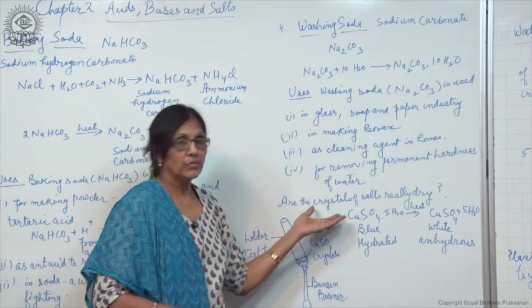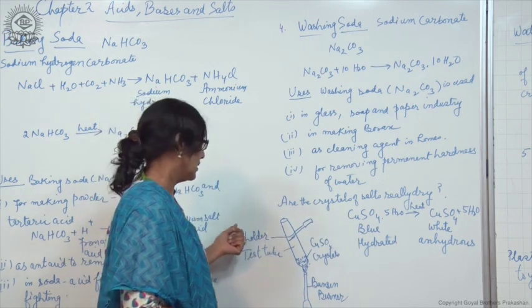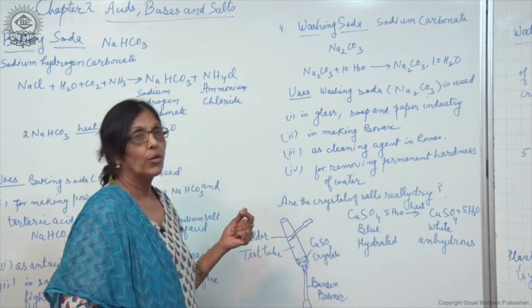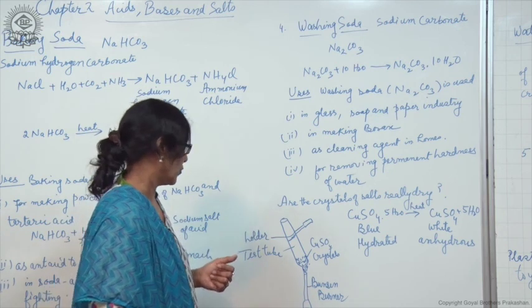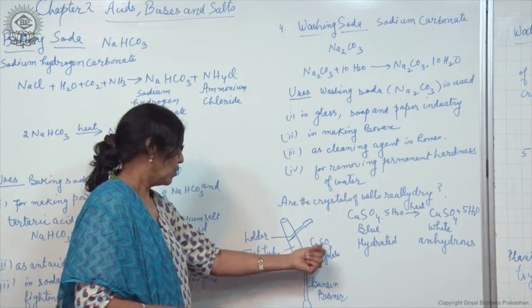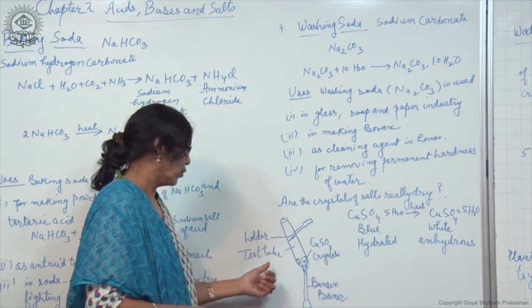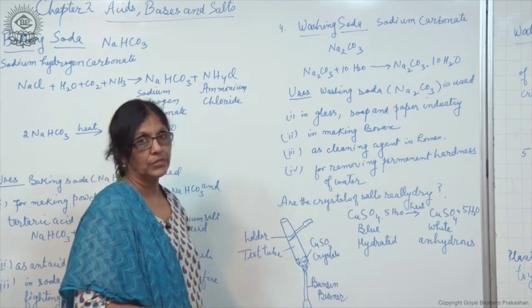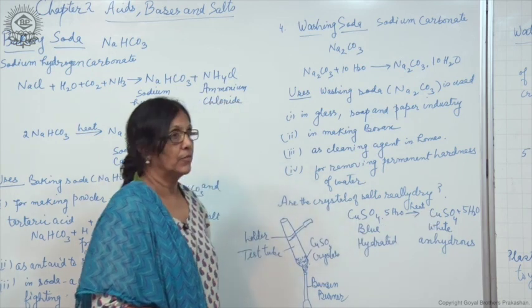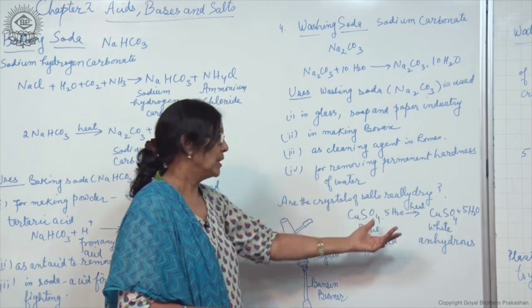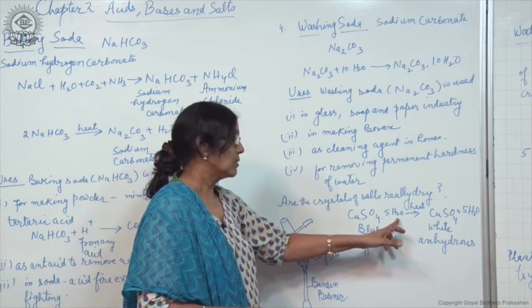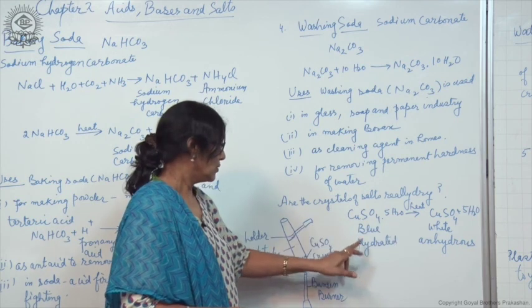We have discussed water of crystallization. We will discuss some more compounds which have water of crystallization. Are the crystals of salts really dry? They are dry, but some crystals, some salts, some compounds have water molecules which become a part of the crystal structure. Let us perform an activity. Take a dry test tube with copper sulfate crystals which are blue in color, hold it with the help of a holder and heat it over the flame of the Bunsen burner. After some time, the blue color changes to white due to the formation of anhydrous copper sulfate. Anhydrous means the salt from which water molecules have been removed. The salt which has water of crystallization is called hydrated salt.